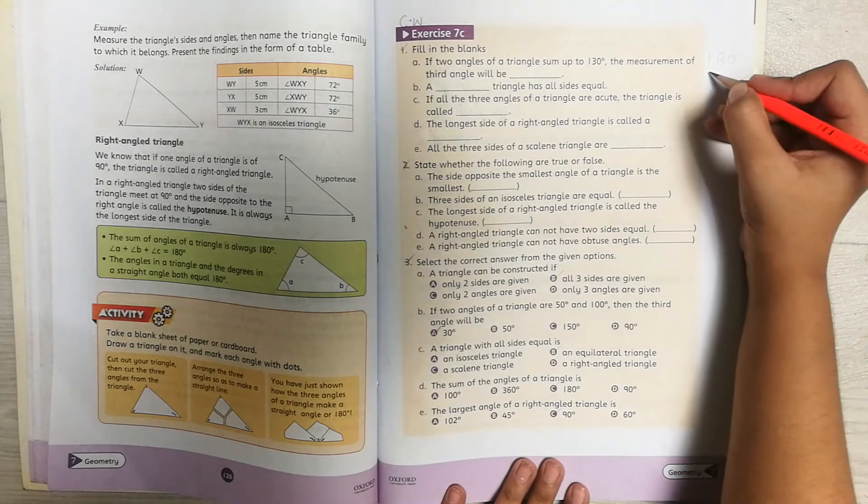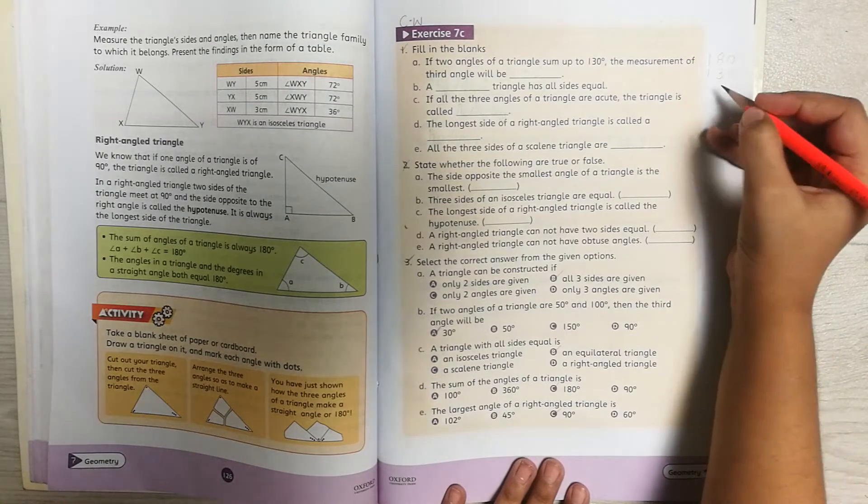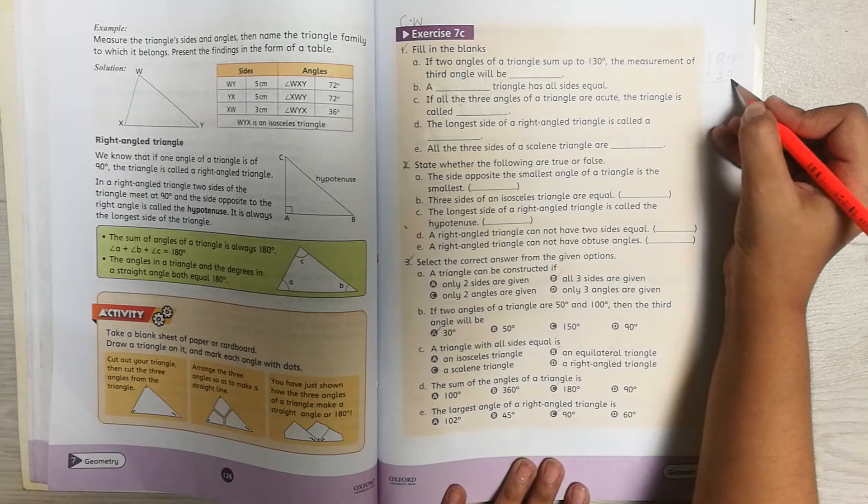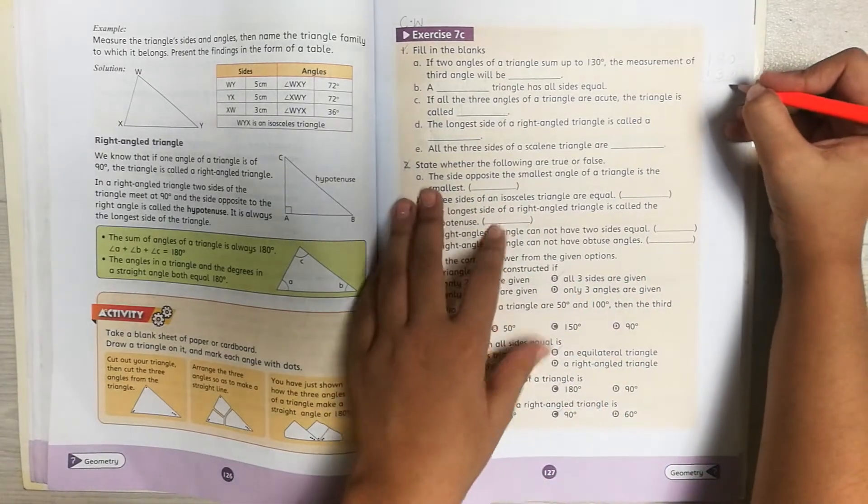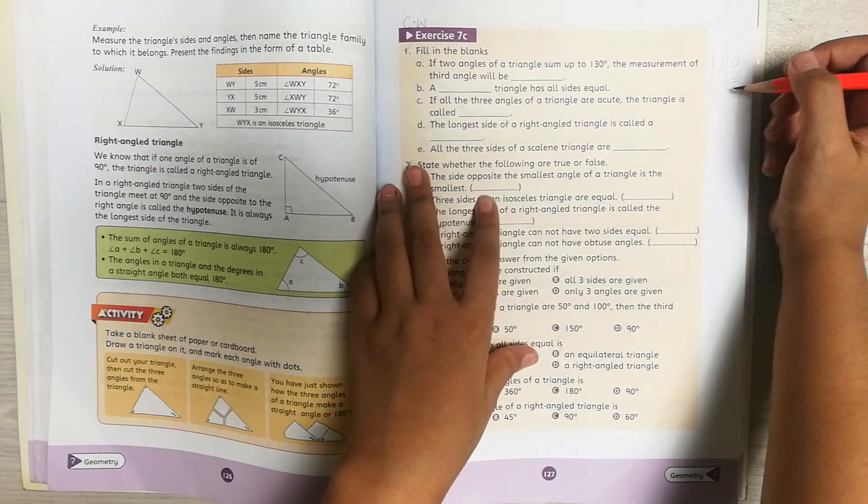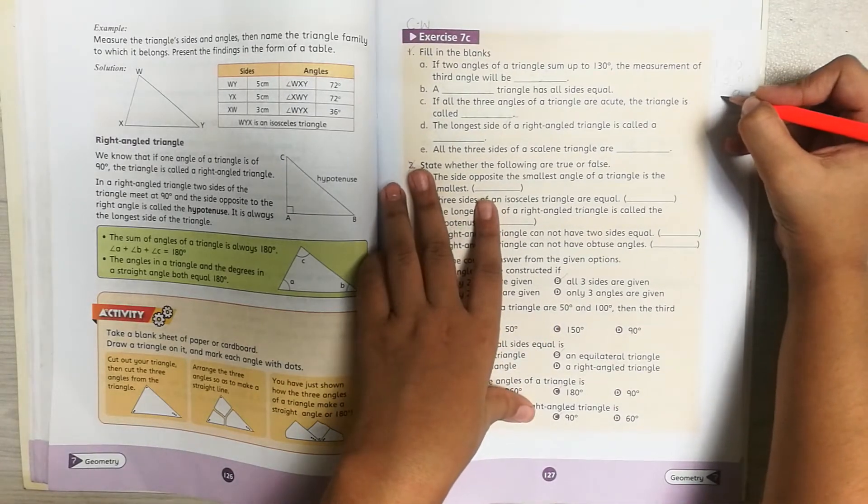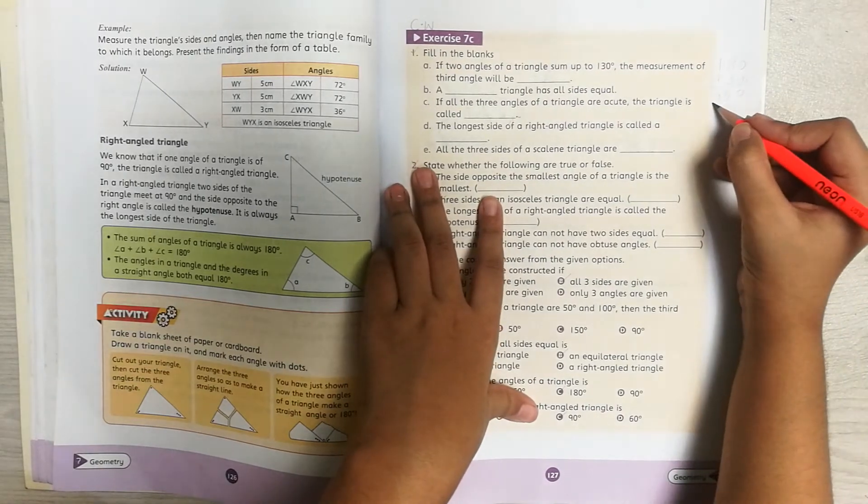Because 180 is bigger than 130, you write it here. I will minus it now. As you know, 0 minus 0 is 0, and if you minus 8 from 3 it is 5, and 1 minus 1 is 0. So yes, this is our answer.